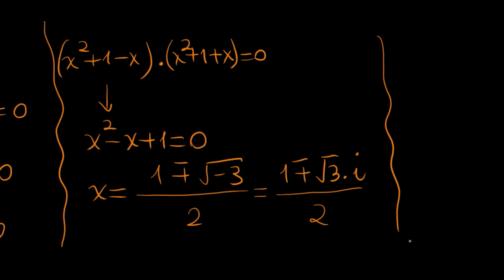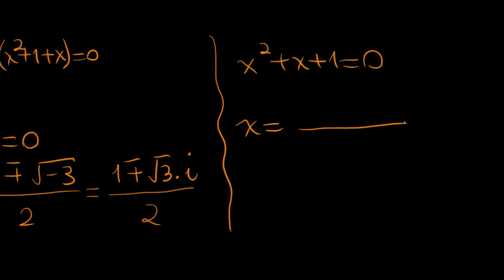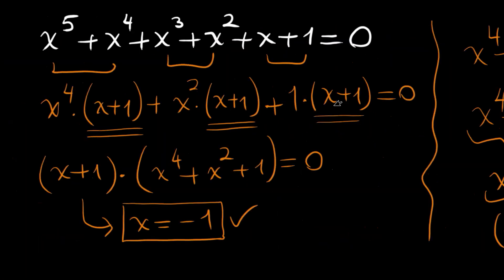The second quadratic, x squared plus x plus 1 equals 0, gives us x equals negative 1 plus or minus the square root of negative 3, which is root 3 times i, divided by 2. So our full set of solutions consists of these two complex pairs plus x equals minus 1, our real root. Thank you for watching and see you in the next video.